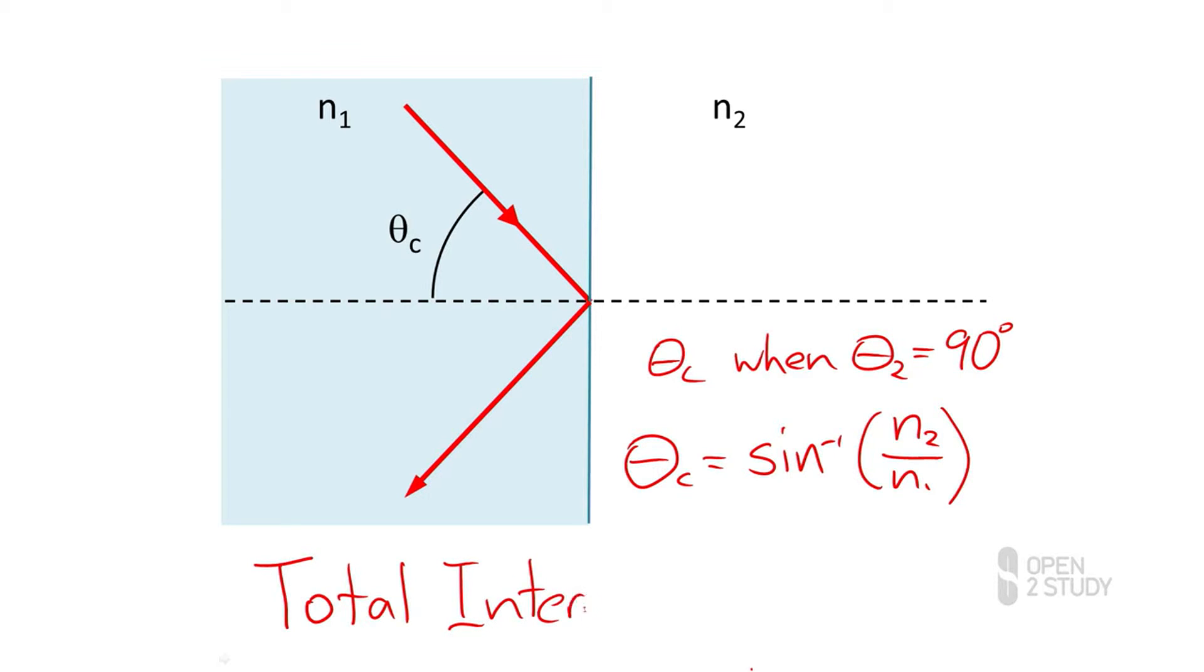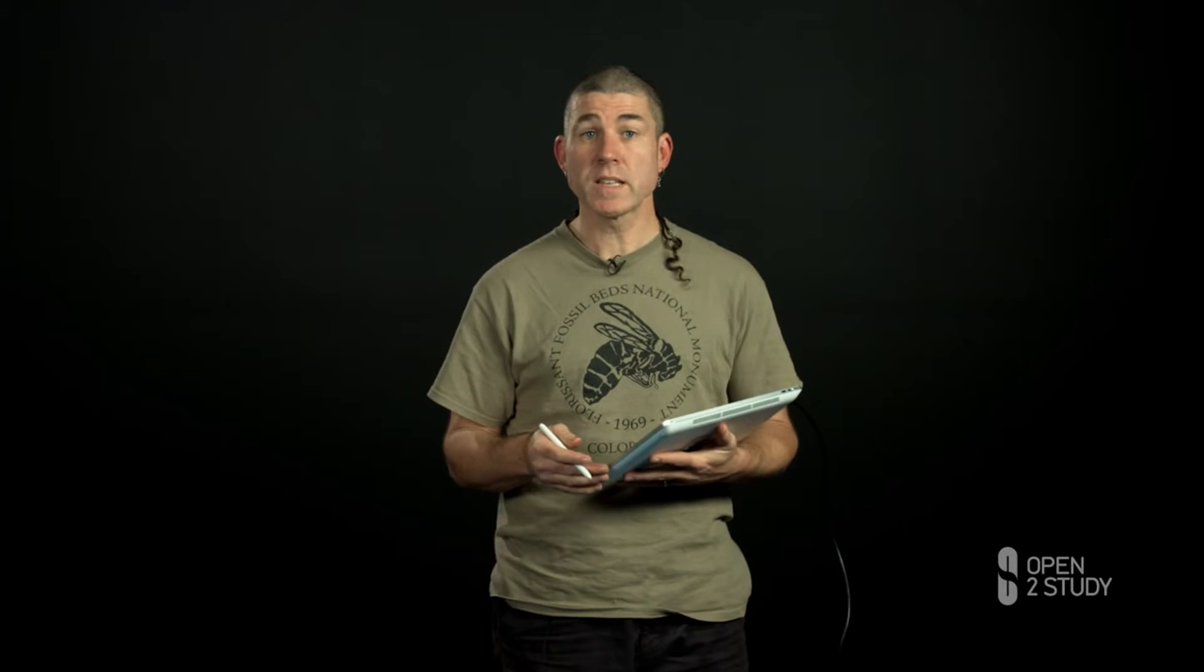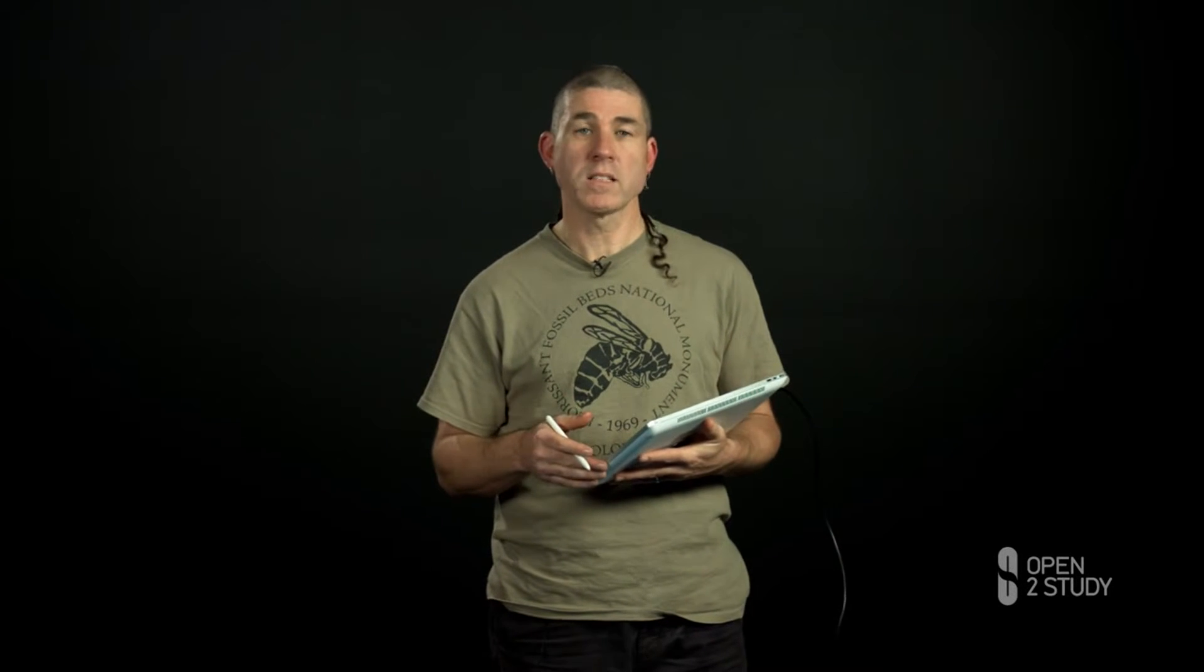And that should be a fairly obvious name. Instead of refracting, all of the beam stays inside the material and reflects from the interface. In a sense, what we've done is we've turned that interface between the two materials into a mirror. And there are some useful examples where this is quite a nice technology to use.